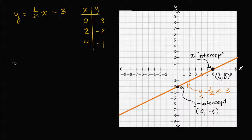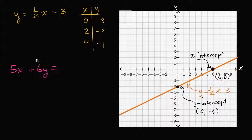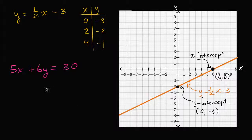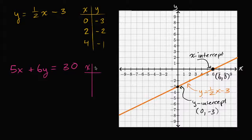Let's say that I have the linear equation five x plus six y is equal to 30. I encourage you to pause this video and figure out what are the x and y-intercepts for the graph that represents the solutions — all the x-y pairs that satisfy this equation. The easiest thing to do here: let's see what the y value is when x is equal to zero, and what the x value is when y is equal to zero.